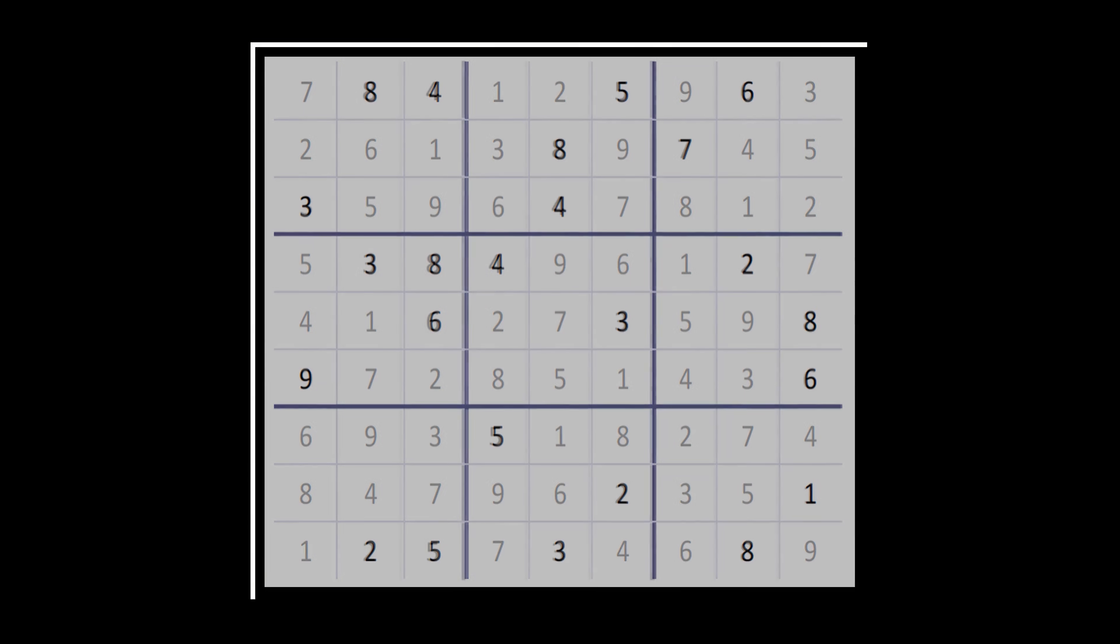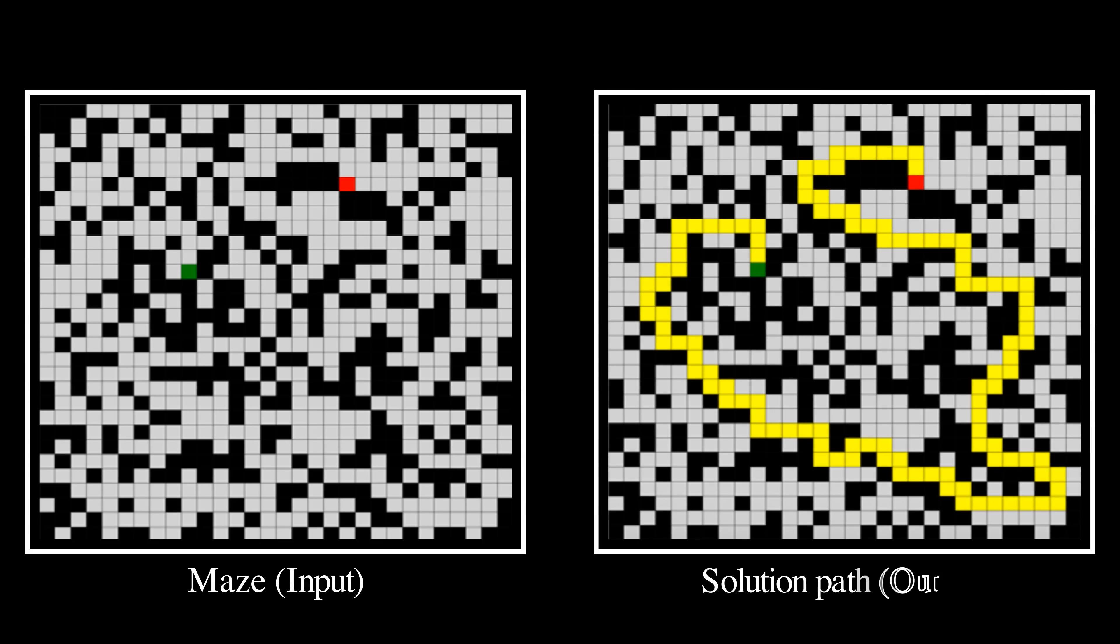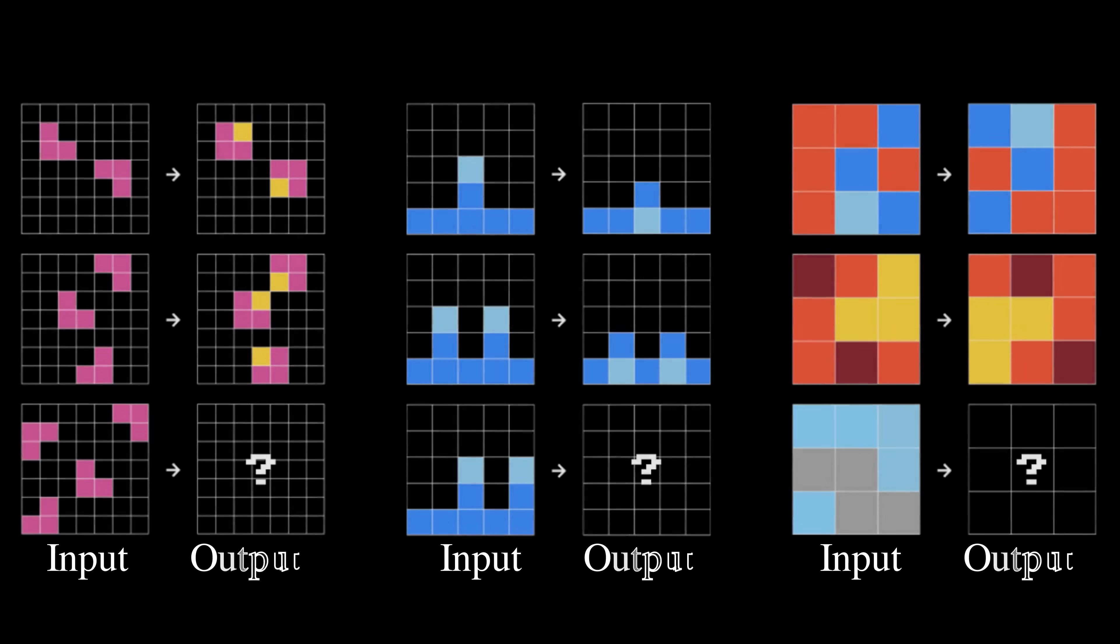How can AI learn to solve Sudoku puzzles, navigate a maze, or approach new tasks by generalizing from just a handful of examples?